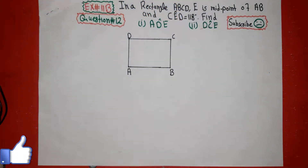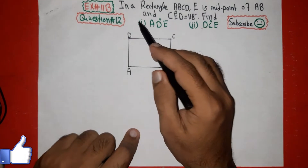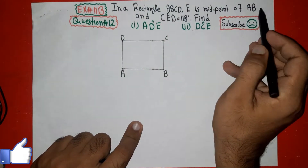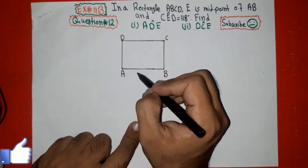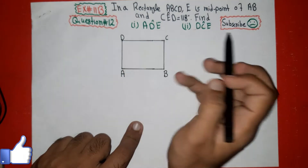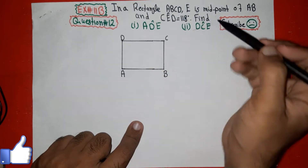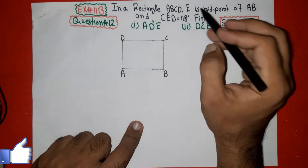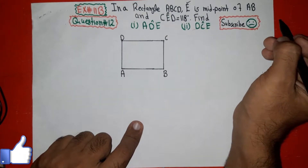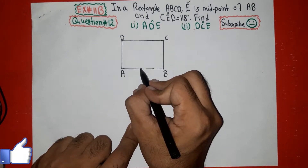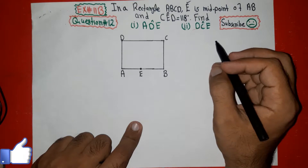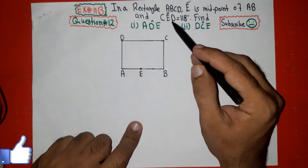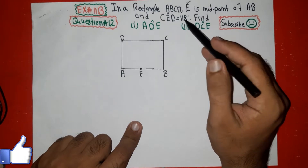Assalamu alaikum dear friends. In this video we will solve question number 12 of exercise 11B. The given statement is: in a rectangle ABCD, E is the midpoint of AB. I have drawn rectangle ABCD and marked E as the midpoint of AB.